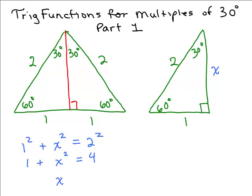Subtracting 1 from both sides, I have x squared equals 3. And then we could just take the square root of both sides and remember x is a length, so x will be positive. So x is square root of 3. So in my picture here, this is now square root of 3. And this is the triangle you want to remember.